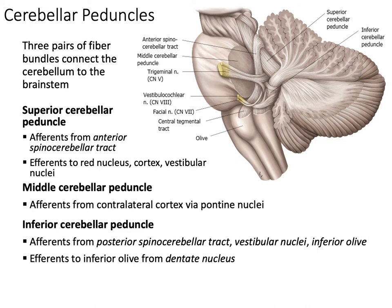Another part of the cerebellum we need to look at are the peduncles — connections from the spinal cord to the cerebellum, essentially the axons of the tracts located here. We have three pairs of fiber bundles connecting the cerebellum to the brainstem: superior, middle, and inferior cerebellar peduncles. The superior cerebellar peduncles contain afferents from the anterior spinal cerebellar tract; they ascend in the brainstem, go past the cerebellum, into the midbrain, and turn back around into the cerebellum. Their outputs go to the red nucleus, the cortex, and vestibular nuclei.